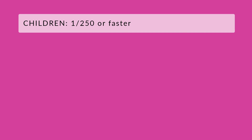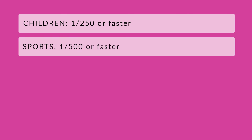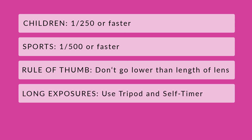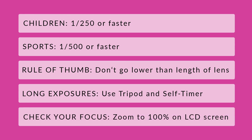Just to review — for children, try to shoot at 1/200th to 1/250th of a second; you'll need to see how quick they are. For sports, your ideal is 1/1000th or above, but in a dark gym you'll probably want 1/500th and adjust your ISO for proper exposure. Don't go lower than 1/500th or you'll get really blurry photos. Remember: don't go lower than the focal length of your lens — with a 300mm lens, no lower than 1/300th. For long exposures, use a tripod and self-timer. Always zoom in on the back of your camera to double-check focus.